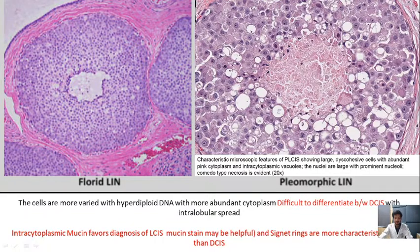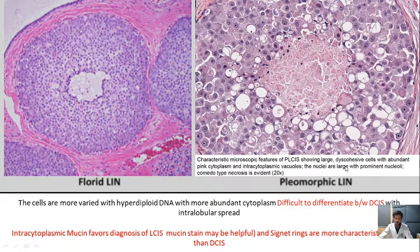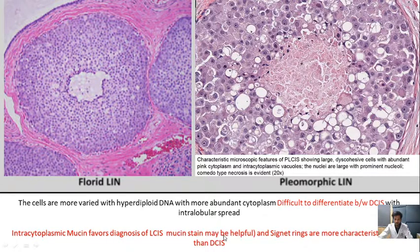The two variants of lobular intraepithelial neoplasia are florid lobular intraepithelial neoplasia and pleomorphic lobular intraepithelial neoplasia. In these variants, the cells are discohesive with abundant pink cytoplasm and intracellular mucin vacuoles. The intracellular mucin favors the diagnosis of lobular carcinoma in situ, and the signet ring cell is characteristic of lobular carcinoma in situ as compared to ductal carcinoma in situ.